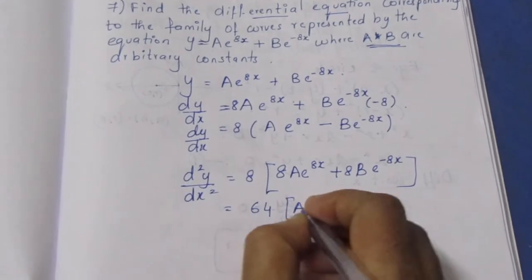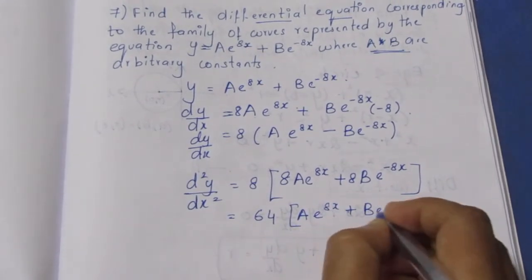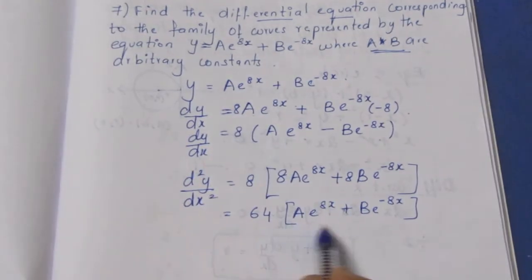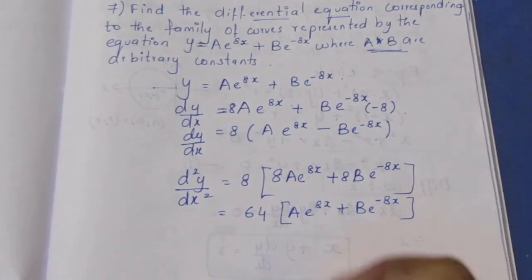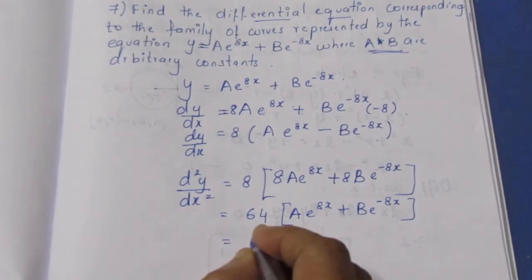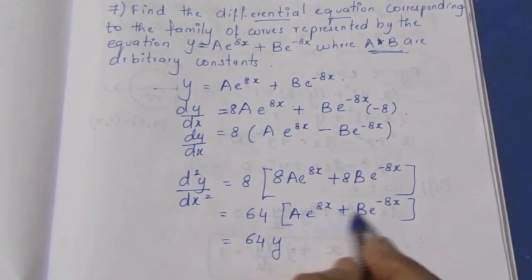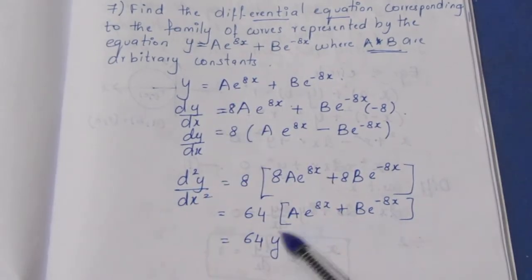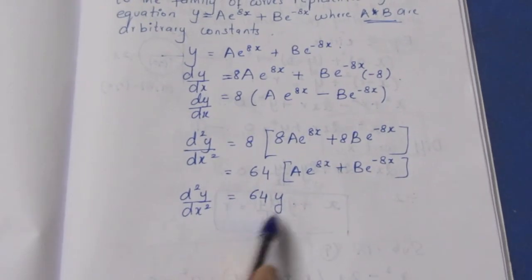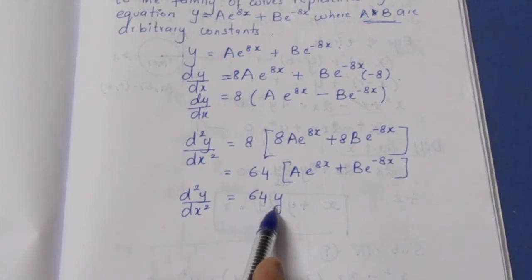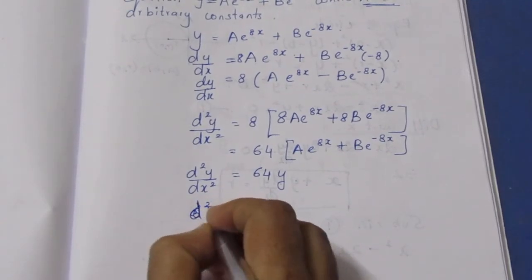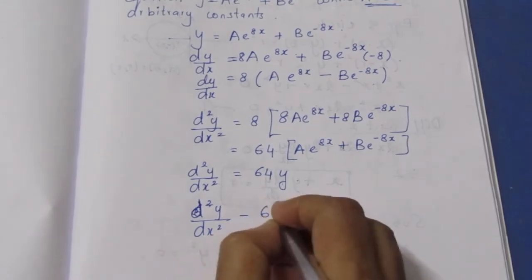We have a e power 8x and b e power minus 8x as the variables in y. With a and b as arbitrary constants, substituting and simplifying gives 64y. So d squared y by dx squared minus 64y is equal to 0.